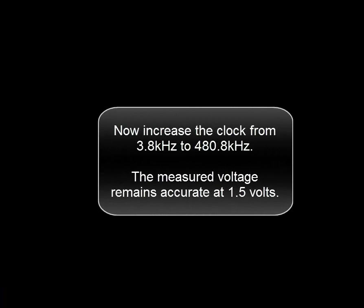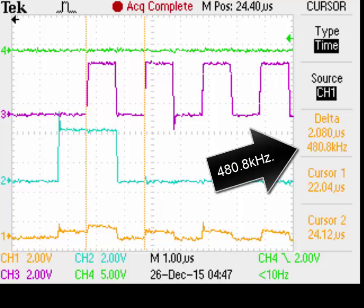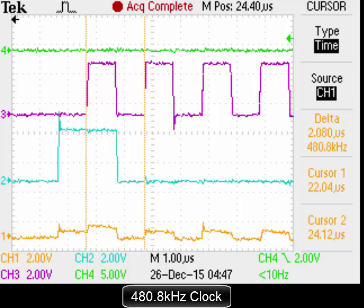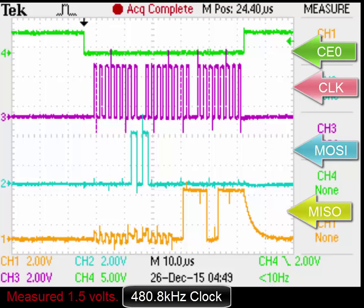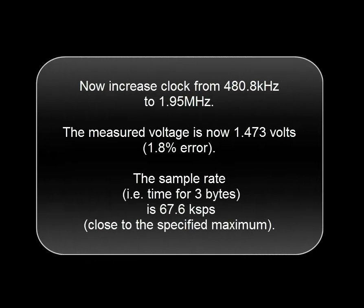Now increasing the clock frequency from 3.8 kHz to 480 kHz. The measured voltage remains accurate at 1.5 volts. There's the 480 kHz clock frequency. Now increasing the clock frequency from 480 kHz to 1.95 MHz. The measured voltage now has an error of 1.8 percent. The sample rate, that's the time for 3 bytes, is 67.6 kS per second, which is close to the specified maximum.